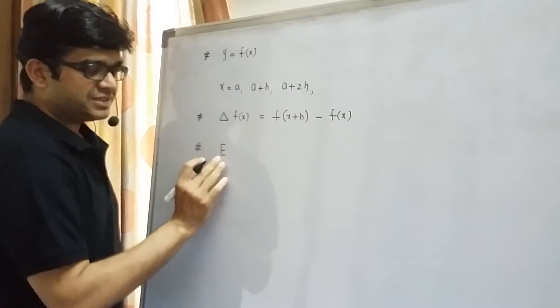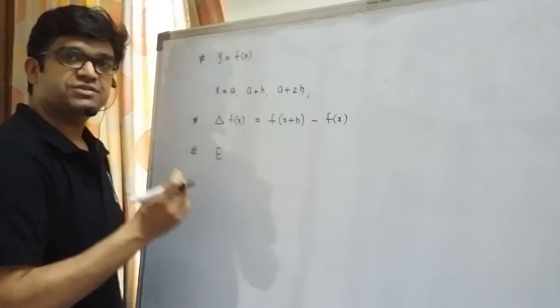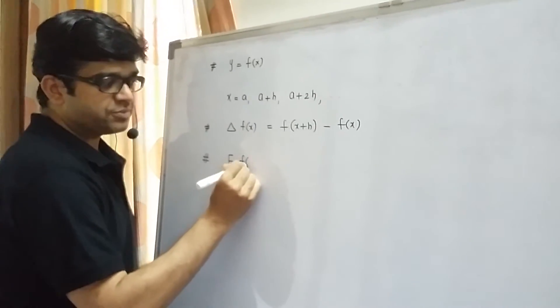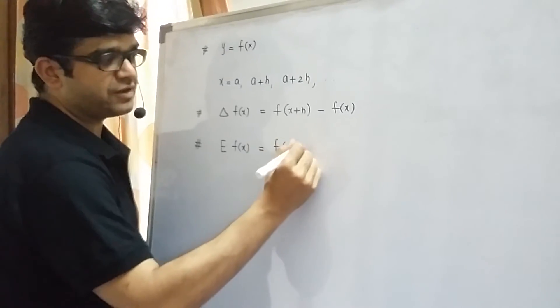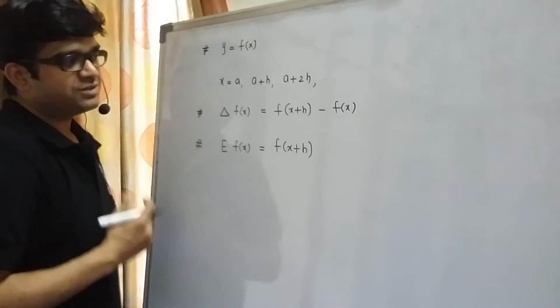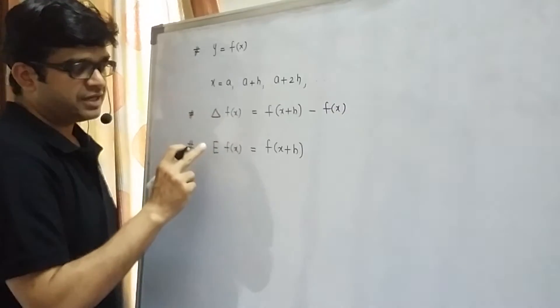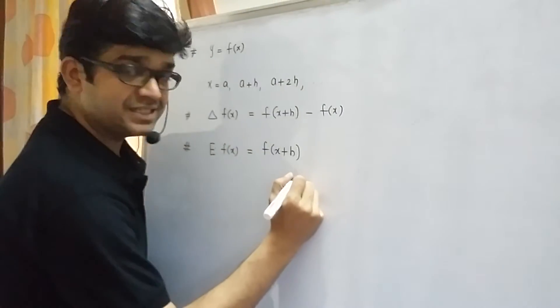Let us understand this operator E. E is called as shift operator. When this is operated on a function f(x), it simply shifts the function to the next value. Now there is an interesting relation between delta and E which we shall see next.